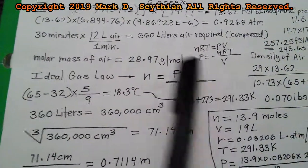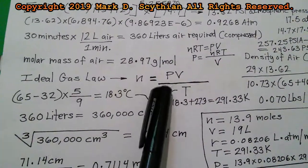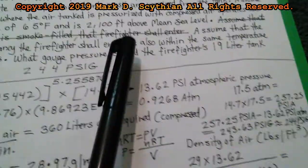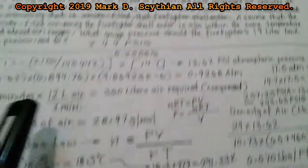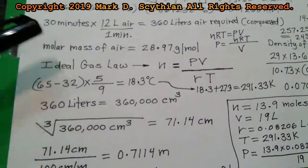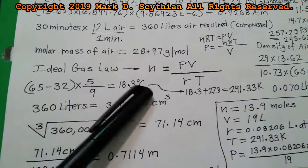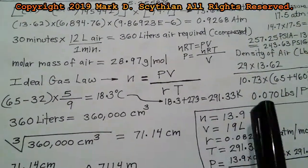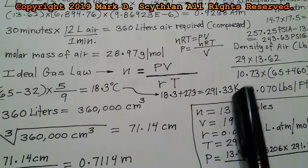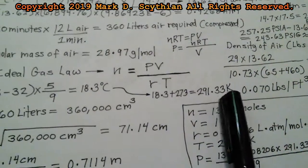We have our ideal gas law formula. We can start by taking the temperature in the Fahrenheit relative scale, converting it to Celsius and then converting it to absolute temperature on the metric system, which is Kelvin, 291.33 Kelvins.